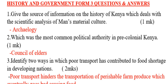Question number one: give the sources of information on History and Government of Kenya which deals with the scientific analysis of man's material culture. The answer is archaeology. Question number two: which was the most common political authority in pre-colonial Kenya? That one is the council of elders.